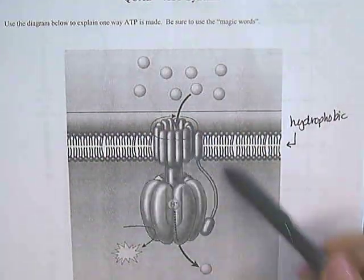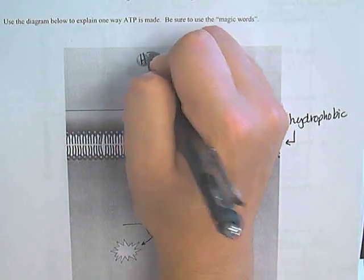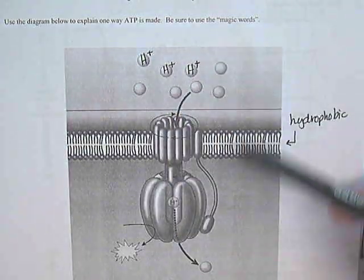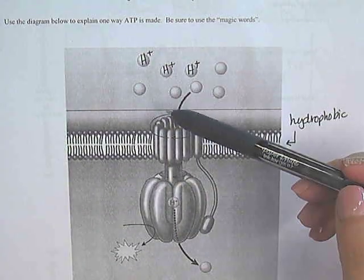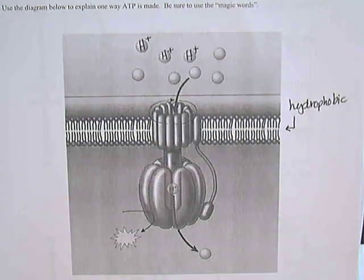And then you have your ATP synthase here, and we have our hydrogens. Hydrogens have a charge on them, they are positive, so they will not be able to freely cross the membrane. They're going to have to pass through a specialized transmembrane channel, and in this case that transmembrane channel is ATP synthase.